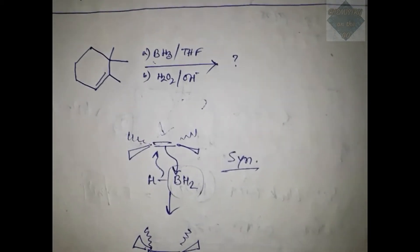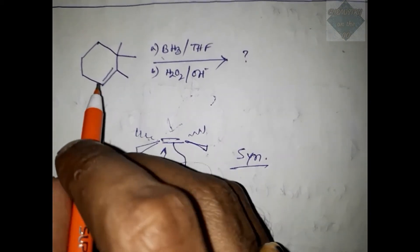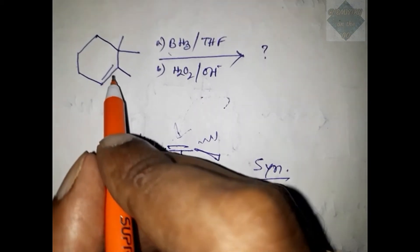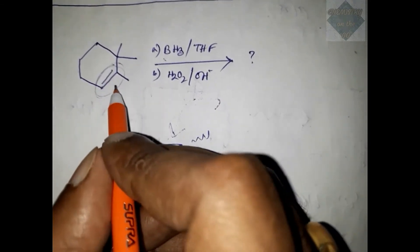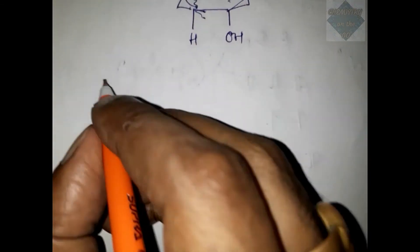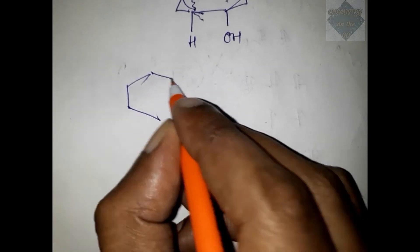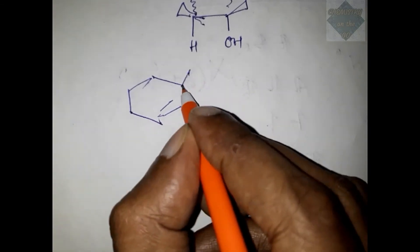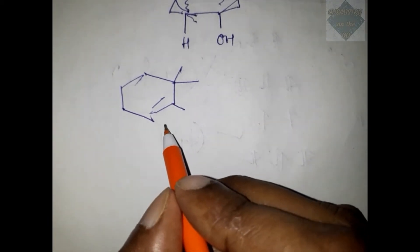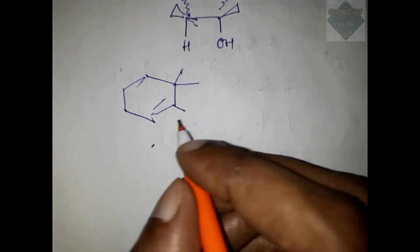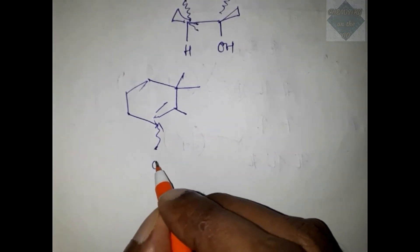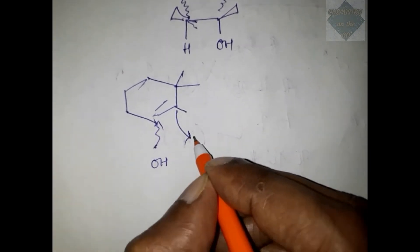Now coming back to the problem once again, we can see that BH3 will be added on that double bond. Take a fresh compound once again—this is the structure. Obviously, BH3 is an anti-Markovnikov addition, and hence the BH2 will be added here and H will be added on this carbon.